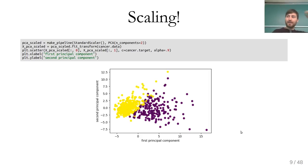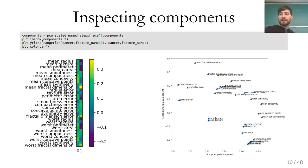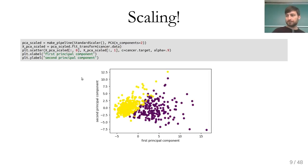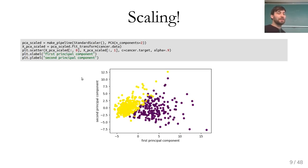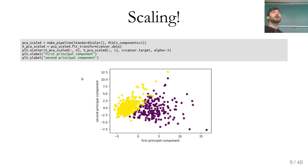Here is the same thing using a pipeline with StandardScaler and PCA, giving a slightly more interesting plot. After scaling, you can see that now basically all the features participate in both principal components. What's nice is that even though PCA is completely unsupervised — it doesn't know this is a classification task — we just find the direction of maximum variance and project onto it.